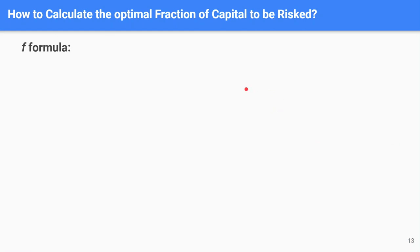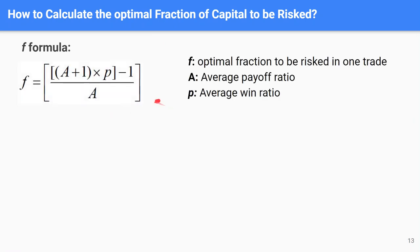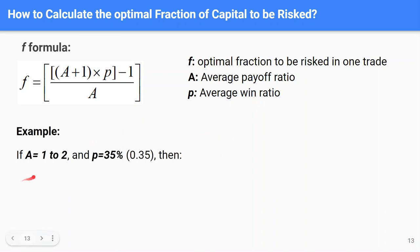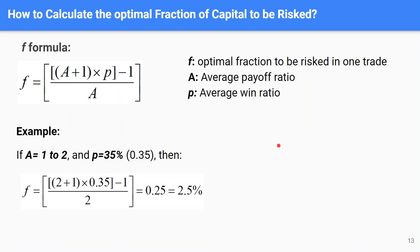We have a formula to calculate the optimal fraction of capital to be risked in each trade. In this formula, f represents the optimal fraction to be risked in one trade, A is the average payoff ratio, and p represents the average win ratio. For example, if your payoff ratio is one to two and your win ratio is 35%, then the optimal fraction you're allowed to risk in one trade is 2.5%.